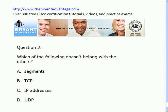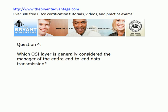Question three: keeping the topic in mind, look at these four options — A, B, C, and D — and tell me which one doesn't really belong with the others. Question four: which OSI layer is generally considered to be the manager of the entire end-to-end data transmission?